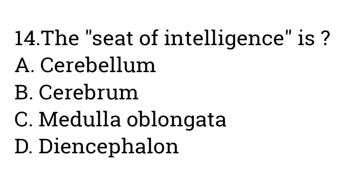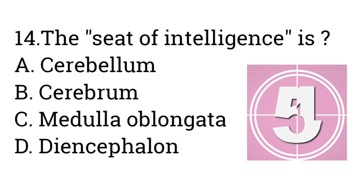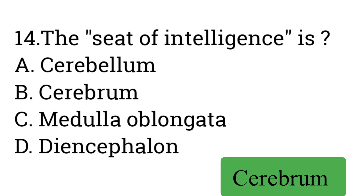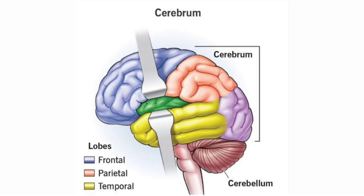Question number fourteen: The seat of intelligence is — A: Cerebellum, B: Cerebrum, C: Medulla oblongata, D: Diencephalon. Answer is Cerebrum. The cerebrum is present at the topmost part of the brain and is the source of intellectual abilities, memories, and planning, which is why it is called the seat of intelligence.